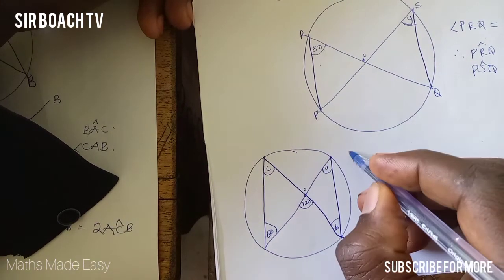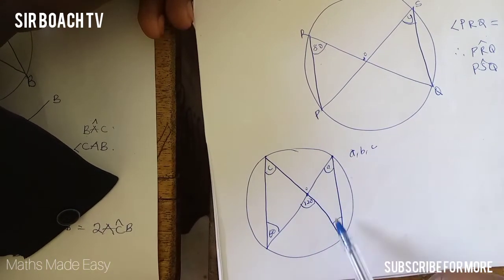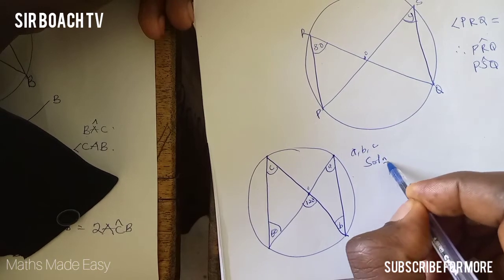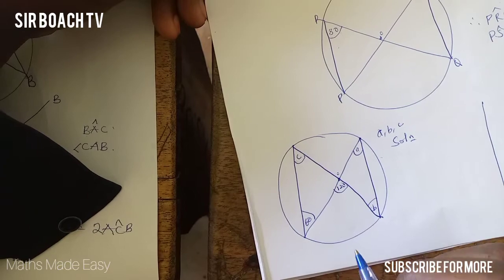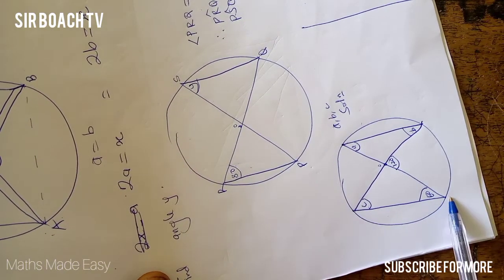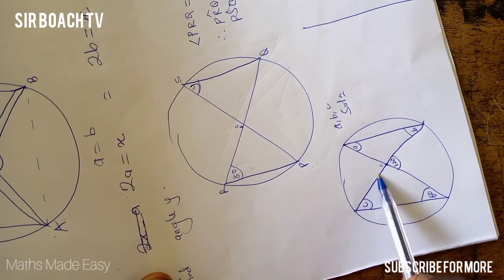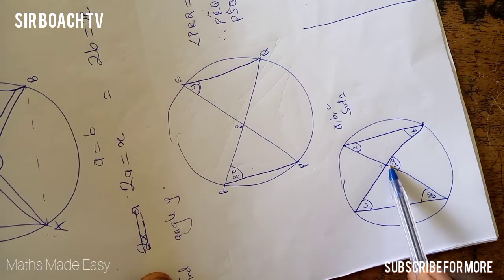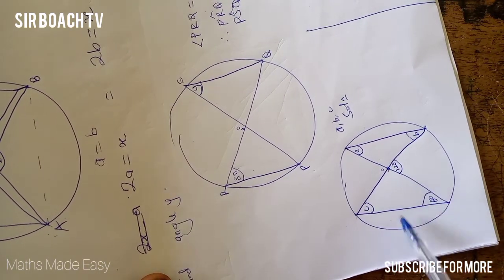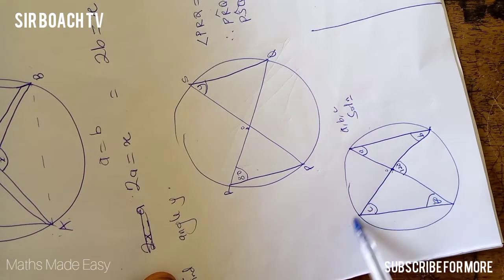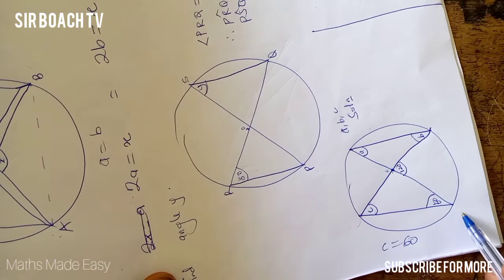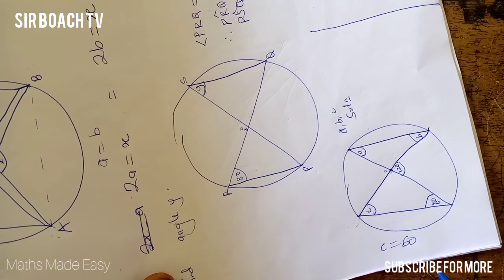Now this question asks us to find A, B, and C. Looking at the diagram, we can see there is a chord, and it first subtends an angle at the center, making this a radius and this also a radius. Because both are radii from the same center, the triangle formed is an isosceles triangle. So C is automatically 60 because this is an isosceles triangle — this line and this line are the same.